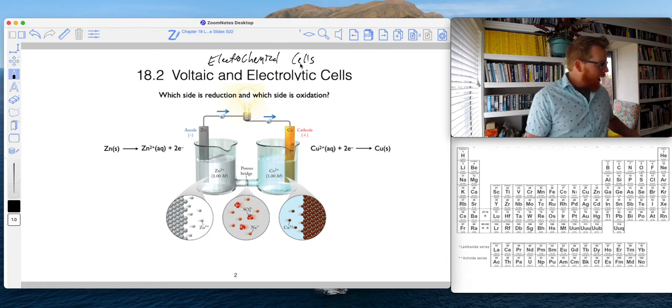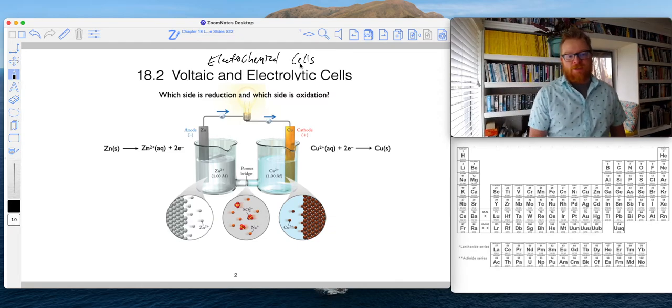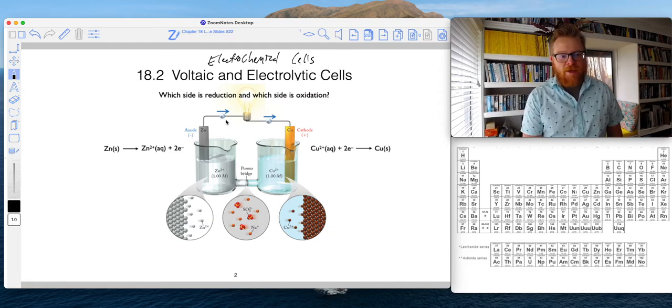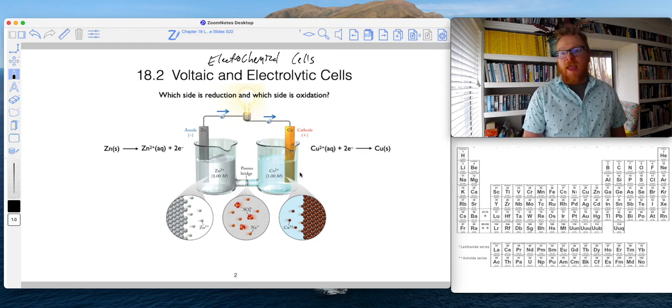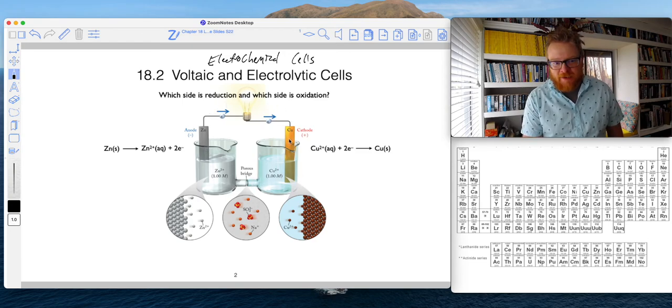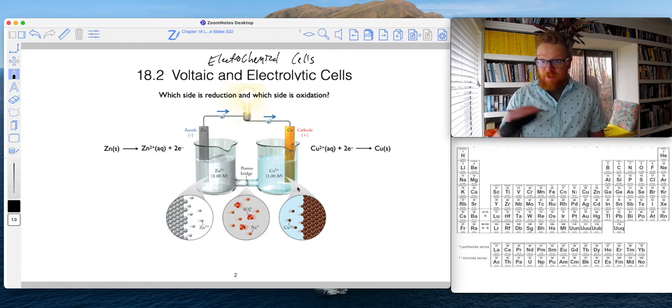In an electrochemical cell there are three main components: one, there is an anode half; two, there is a cathode half; and three, there is a porous bridge which makes a complete circuit connection between the two halves.